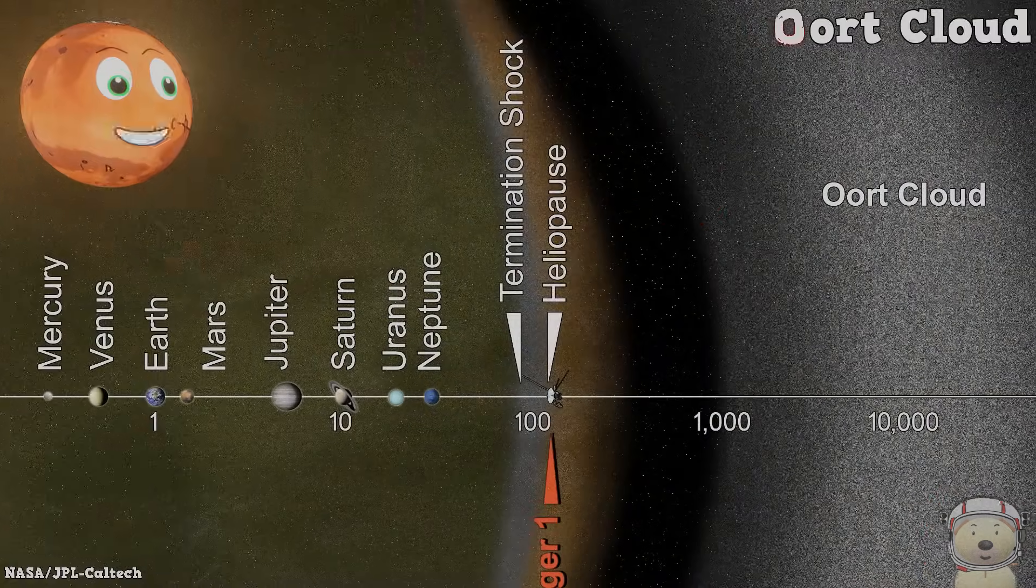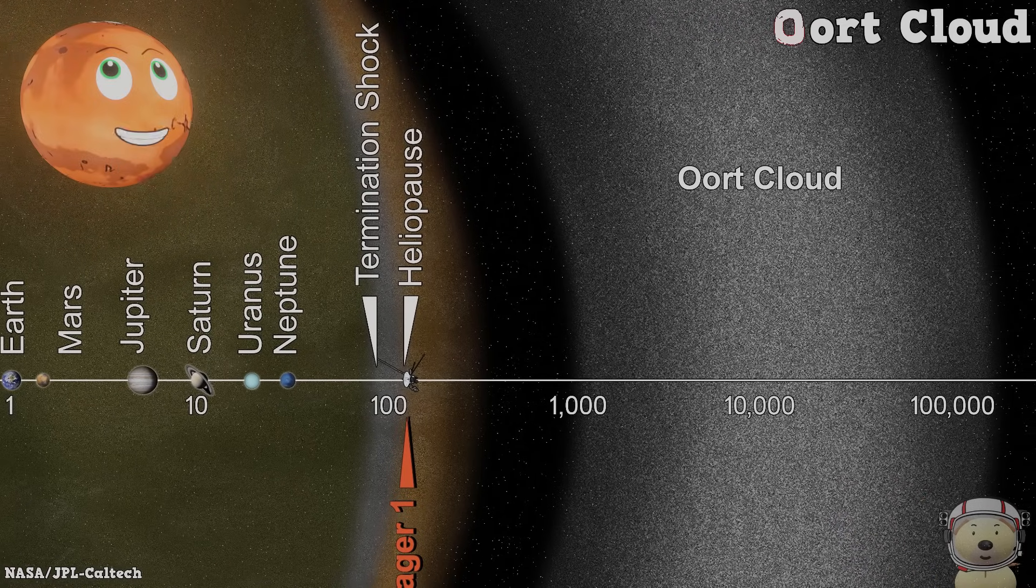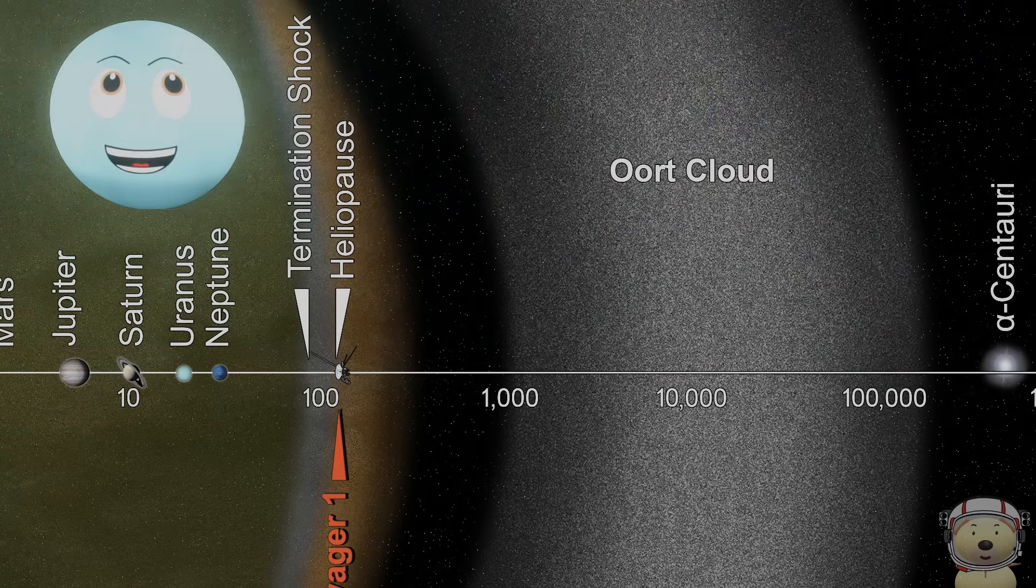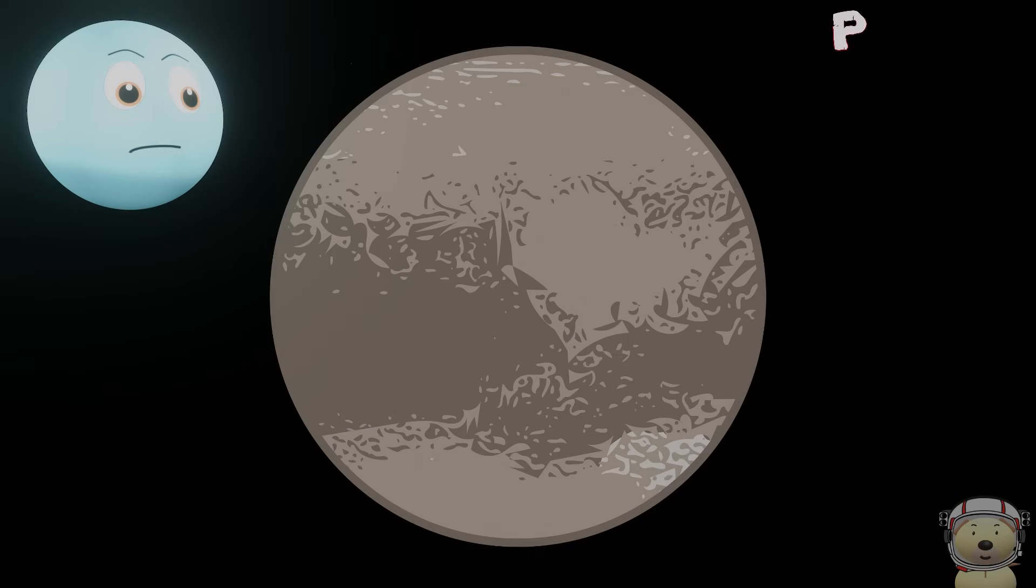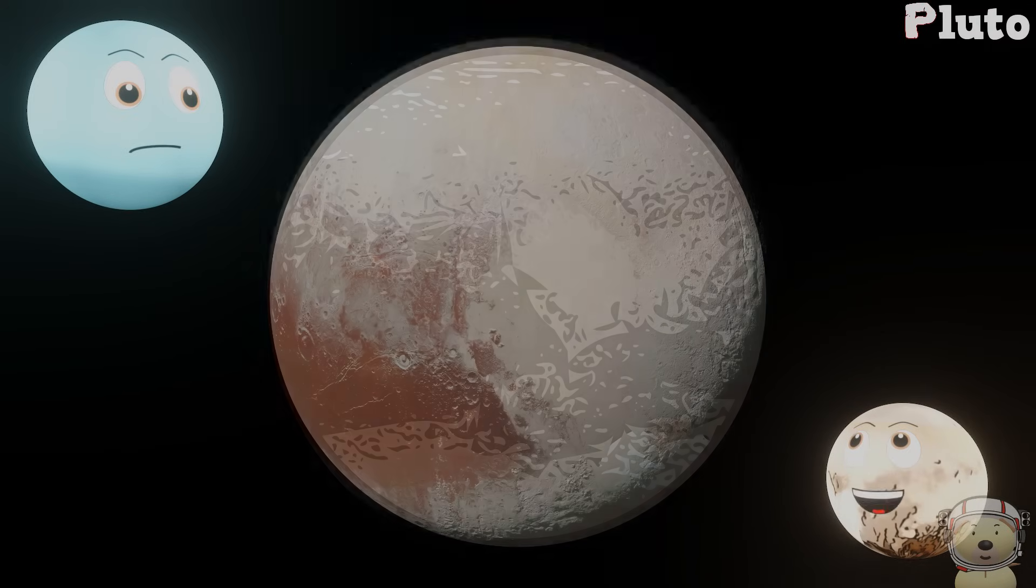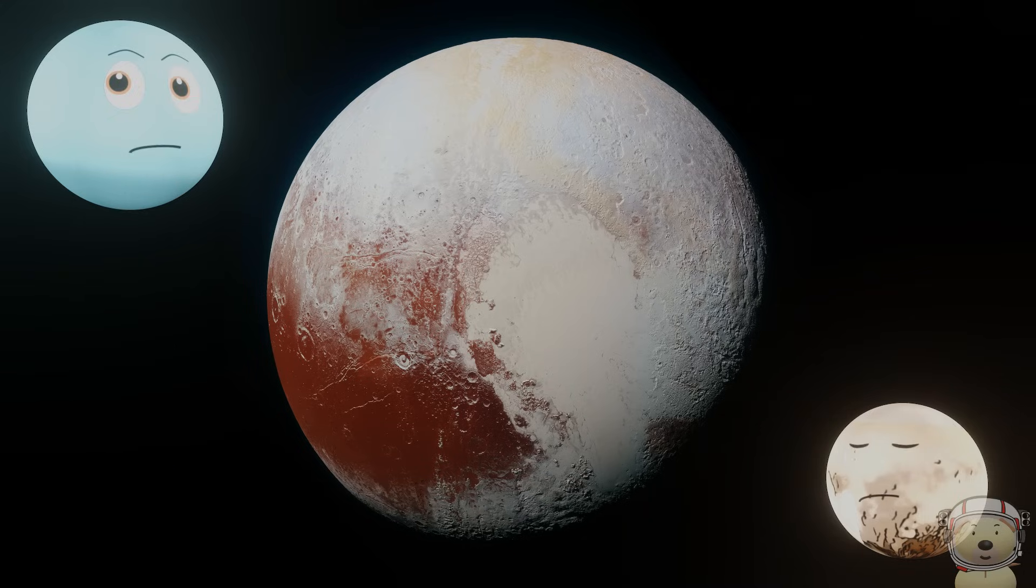O is for Oort cloud, furthest away, icy and cold, you won't want to stay. Make way, make way. P is for Pluto, the dwarf planet is here. Not a planet, I'll make it quite clear. Oh man.